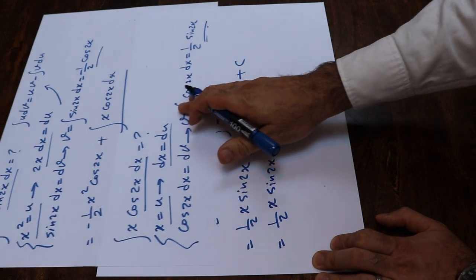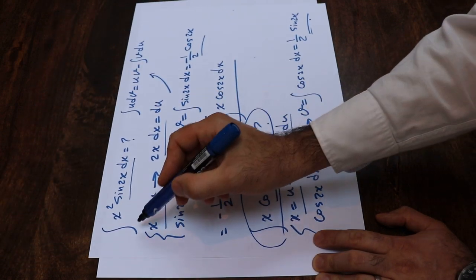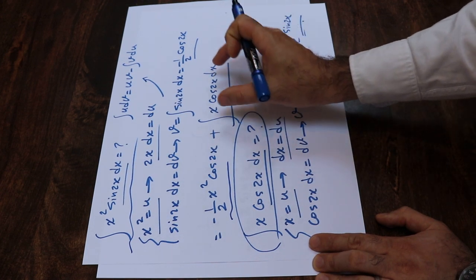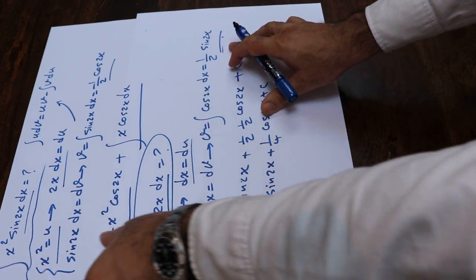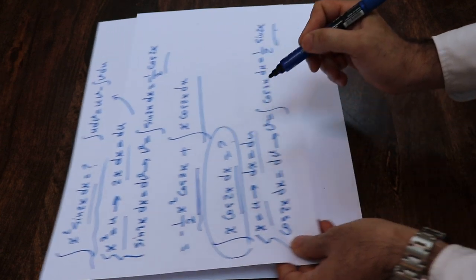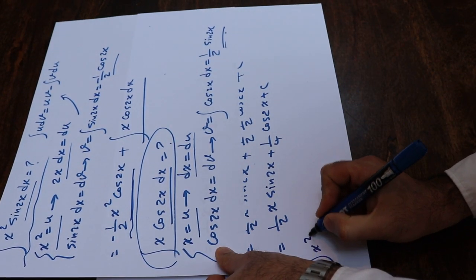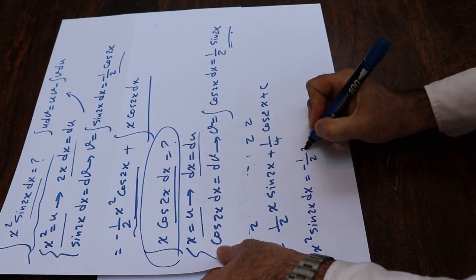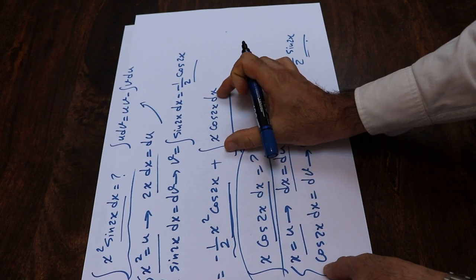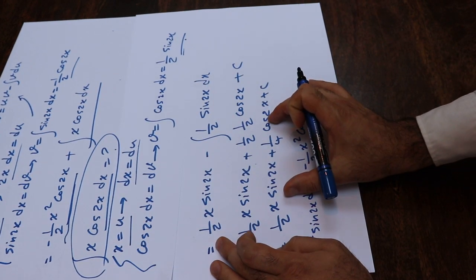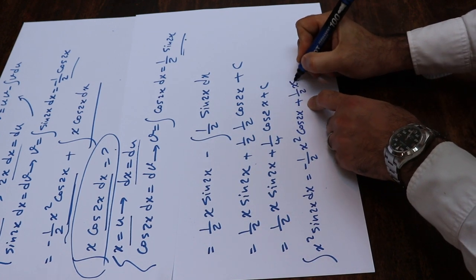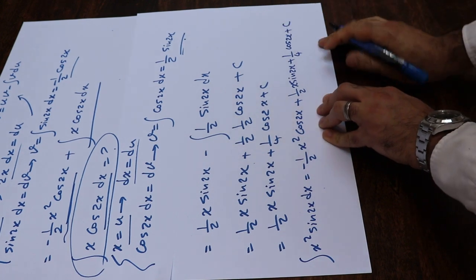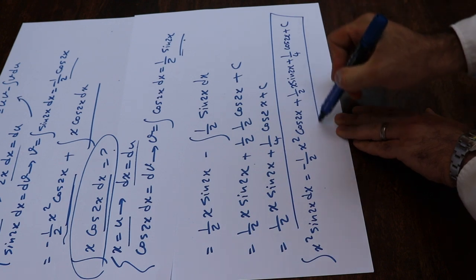This is the solution to this inner integral. But remember, the original question was the integral of x² sine(2x) dx, which was equal to the first term plus the integral of this expression. Now that we've calculated that integral, the original integral equals minus 1/2 x² cosine(2x) plus 1/2 x sine(2x) plus 1/4 cosine(2x) plus C, which is the constant of integration. And that is the solution to our integral.